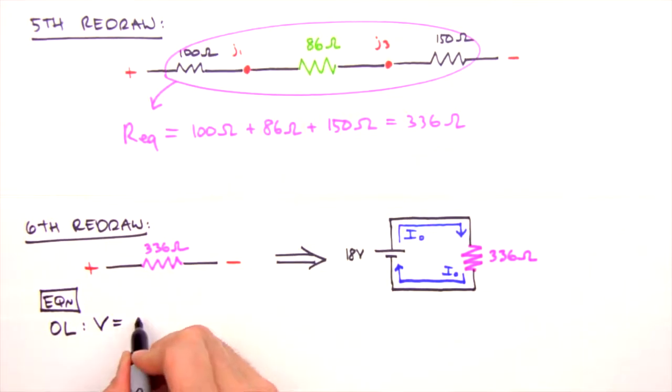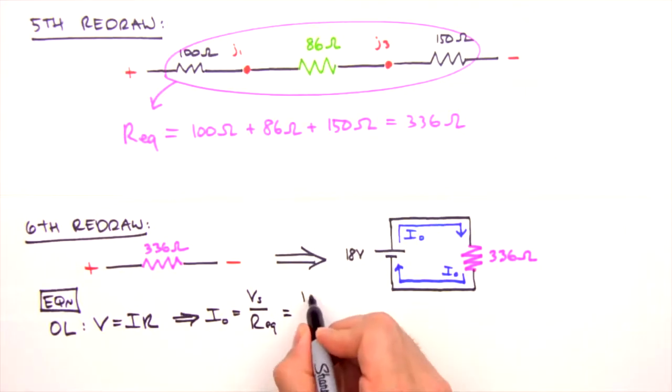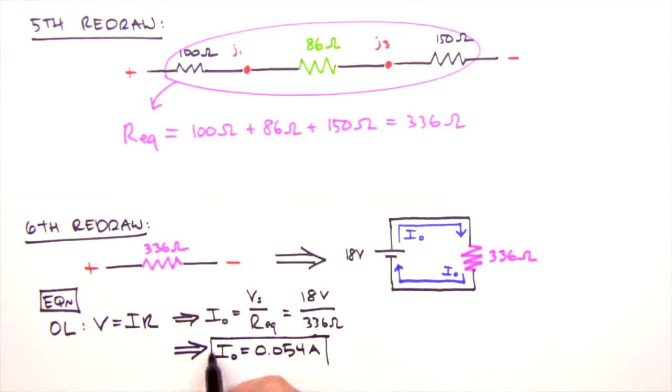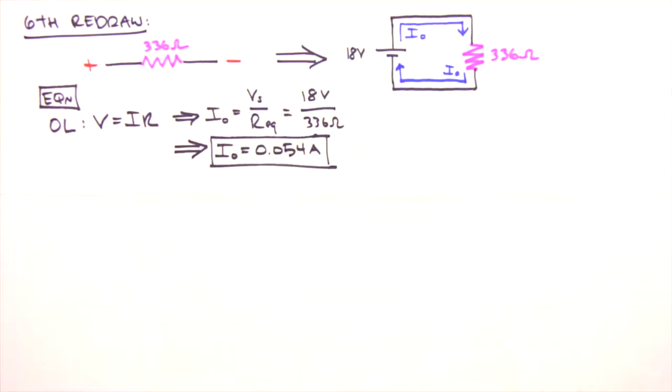We write V equals IR, which we'll solve for I. Which in this situation gives us I0 equals the source voltage divided by the equivalent resistance. Inserting our values, we find that I0 equals 54 milliamps. Eureka! A value for current leaving and re-entering the battery marks the halfway point in our analysis, which means it's time to build it up now.